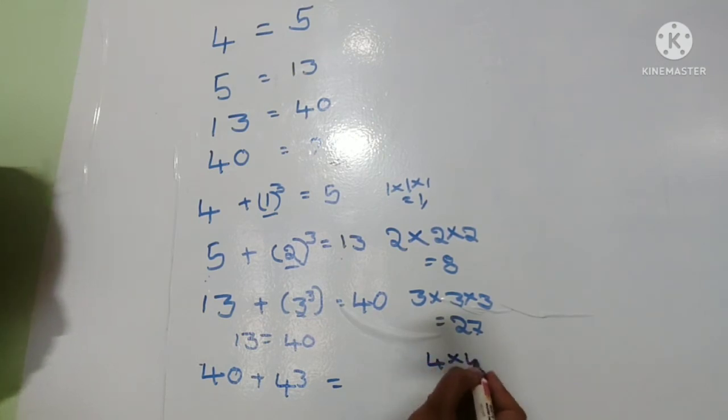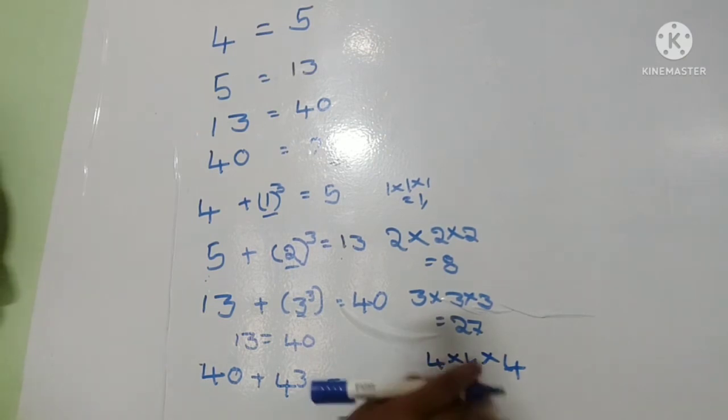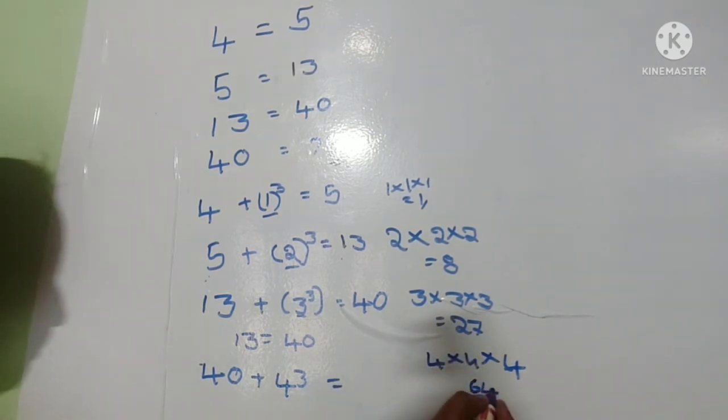Four into four into four: four fours is sixteen, sixteen fours is sixty-four. Right, so forty plus sixty-four equals one hundred and four.